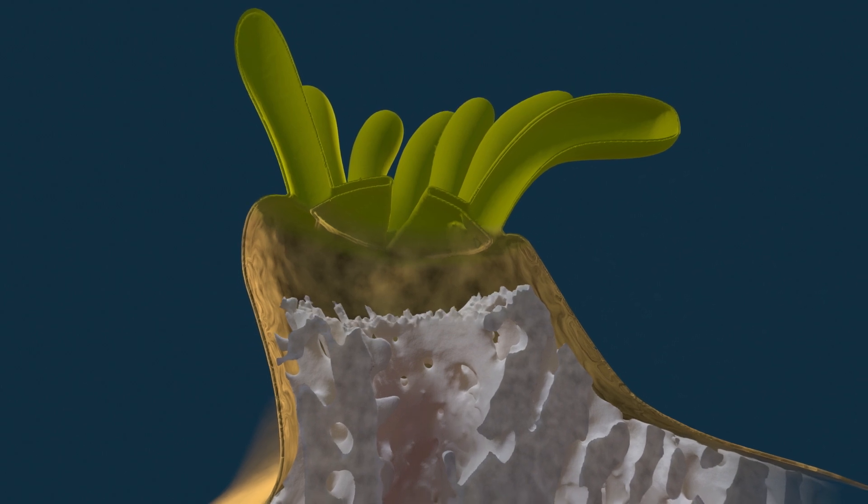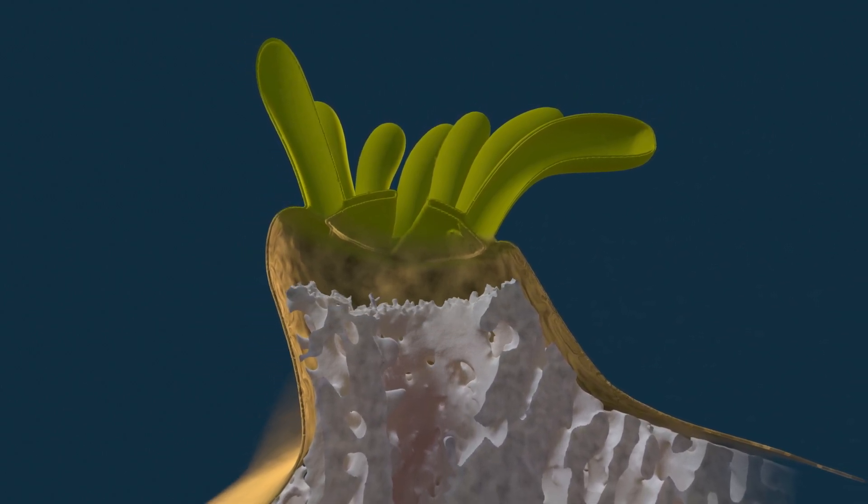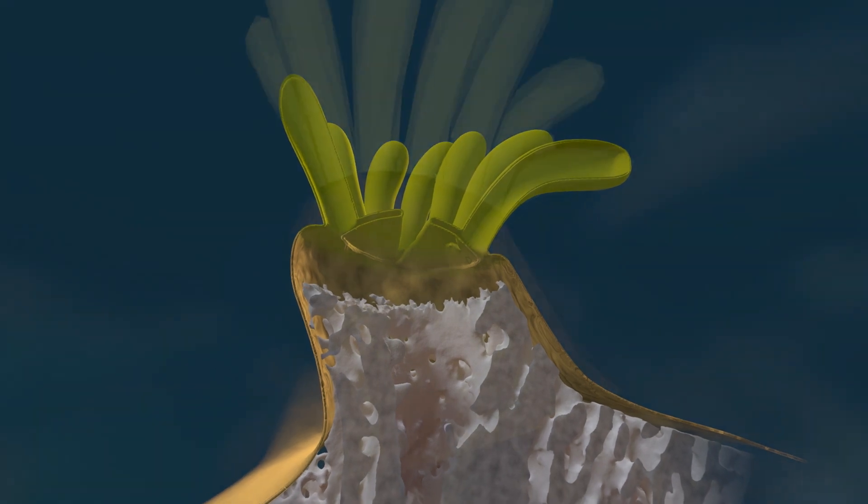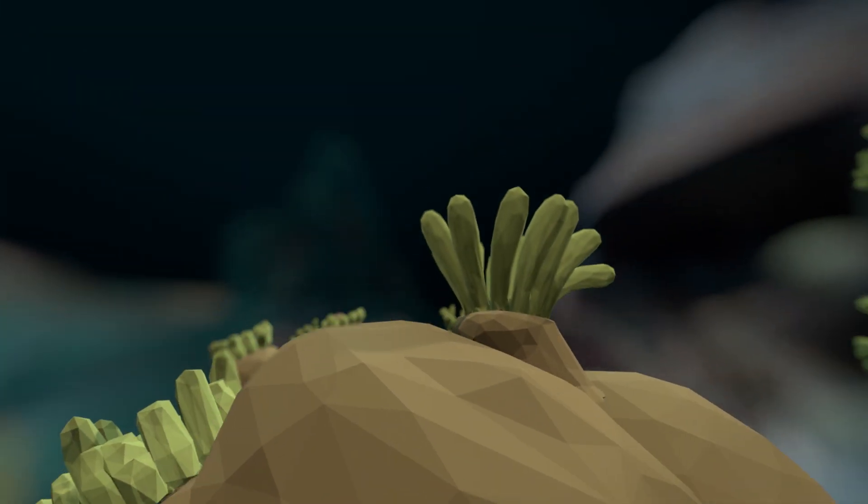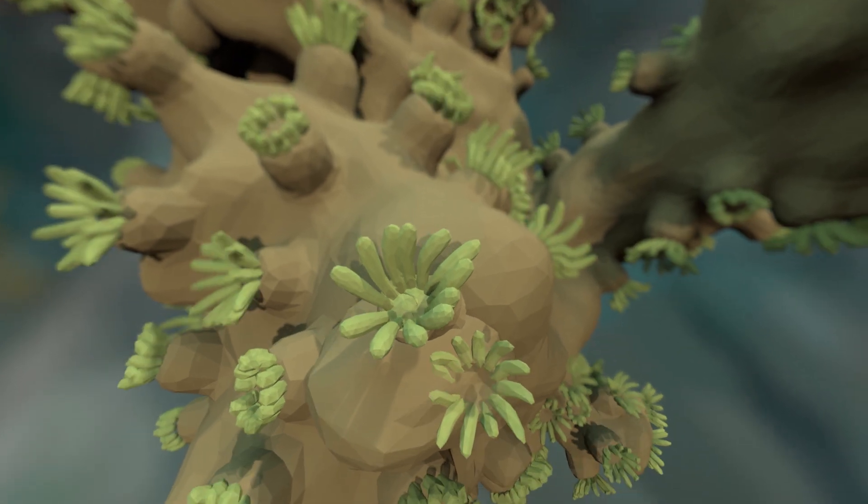Hard coral polyps push away from the surface on which they reside, then fill the gaps with calcium carbonate. Year after year, over and over, they construct an entire reef.